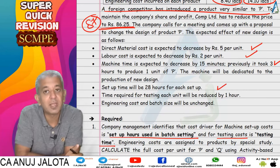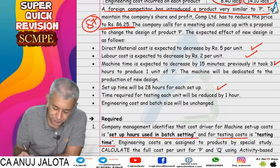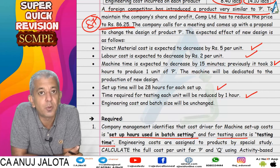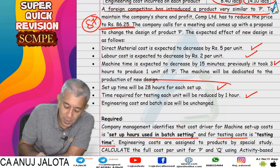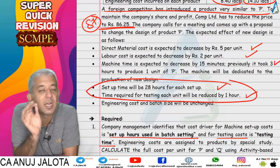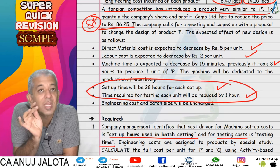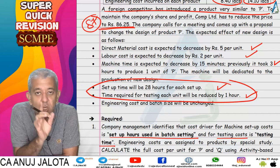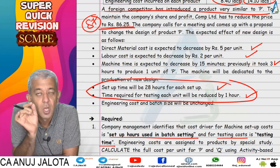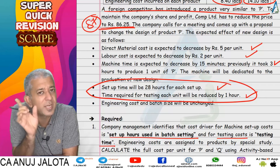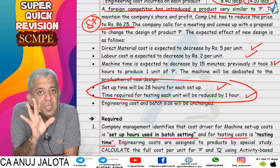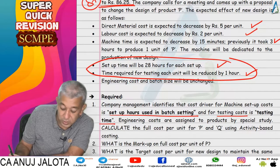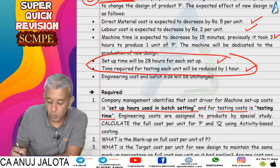Setup time would change to 28 hours, and time required for testing each unit would be reduced by one hour. By default, the cost driver rate remains the same — that is, cost per setup hour and cost per testing hour remain unchanged. This was also explicitly stated in the question.